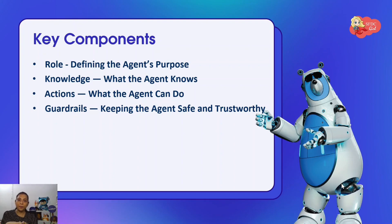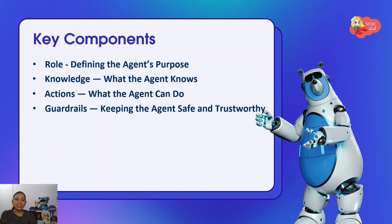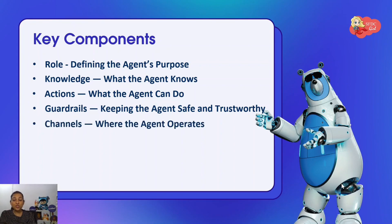Next comes Guardrails — keeping the agent safe and trustworthy. When the topic is AI, questions arise about hallucination, data leakage, data privacy, and getting context-aware answers. Guardrails come to the rescue. Think of them as the rules and safety barriers that keep your agent working within boundaries — whether it's limiting actions to non-financial records or stopping the agent from answering medical questions.